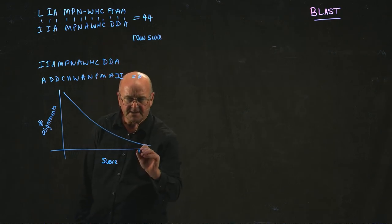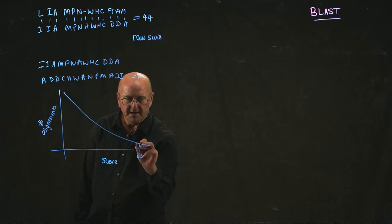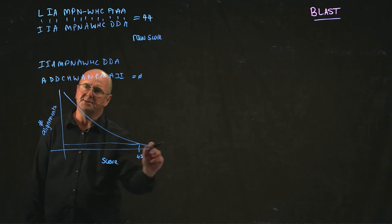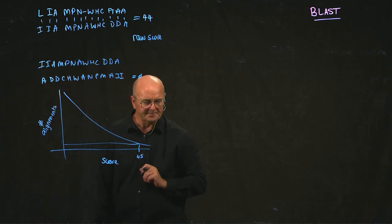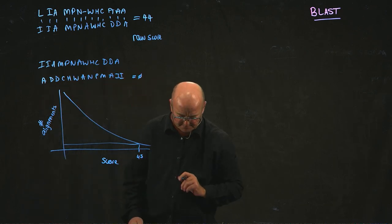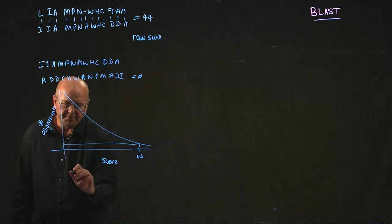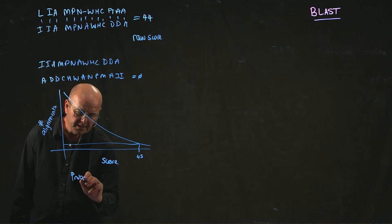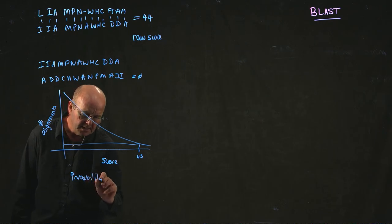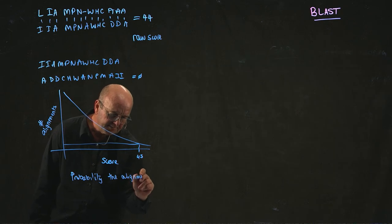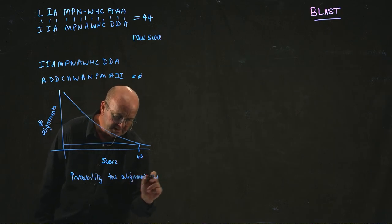So we can take our score of 45 and we can plot it back and say what percentage of the alignments have a score of 45 or better. This is basically the probability that the alignment is significant.